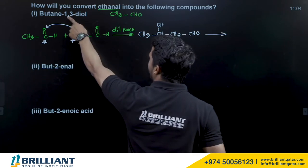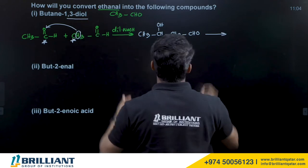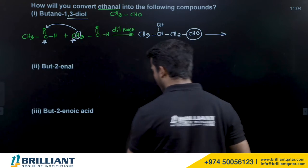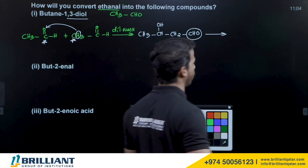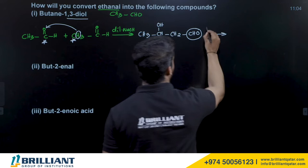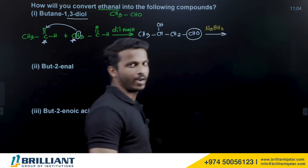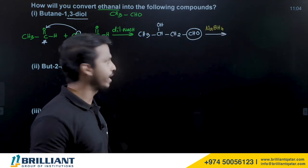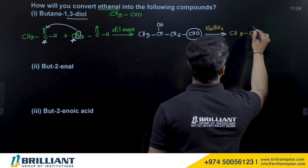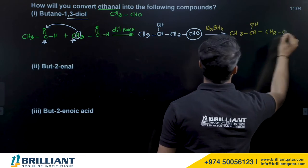But the target product, butane-1,3-diol, has alcohol groups at both the first and third positions. So we need to convert the aldehyde group into an alcohol by reduction. Aldehydes on reduction give primary alcohols; we can use any reducing agent.